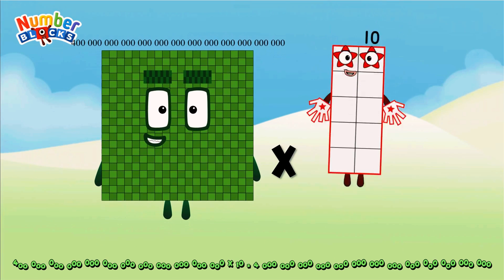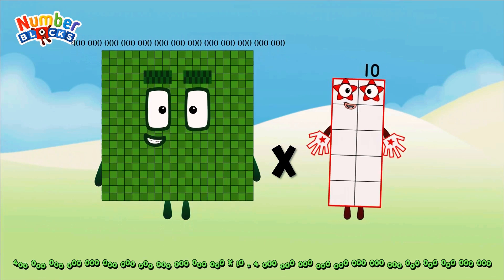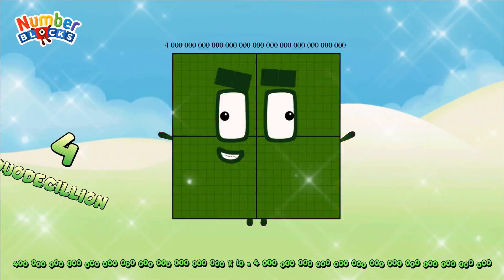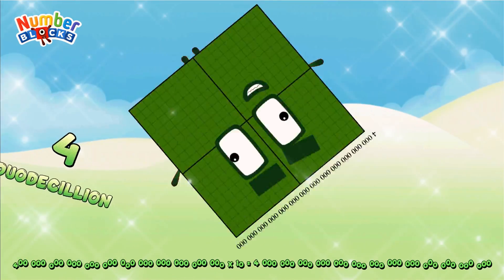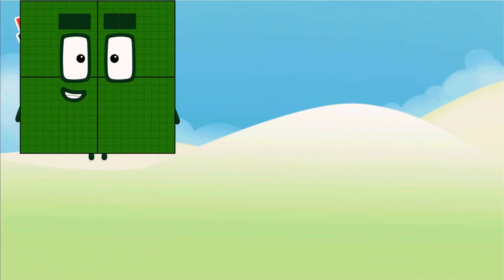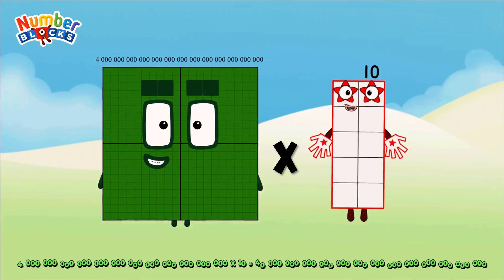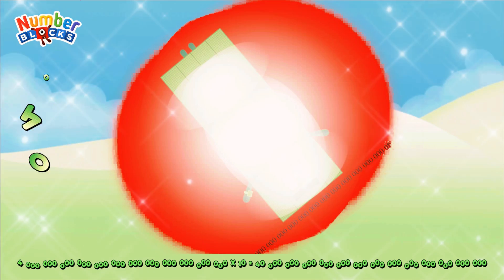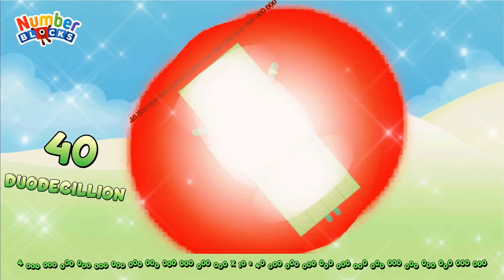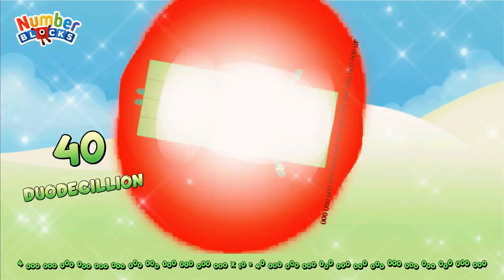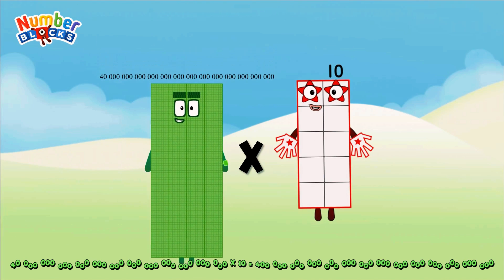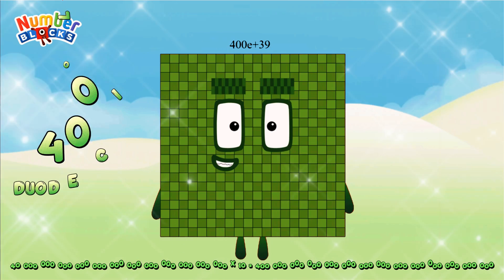Four hundred undecillion, multiplied by ten, equals four duodecillion. Four duodecillion, multiplied by ten, equals forty duodecillion. Forty duodecillion, multiplied by ten, equals four hundred duodecillion.